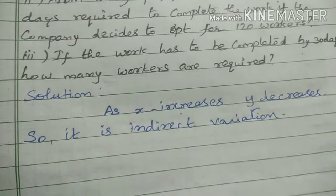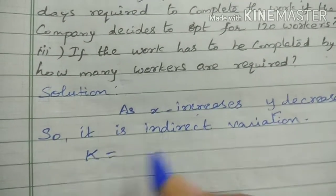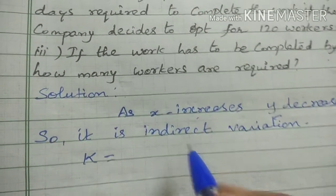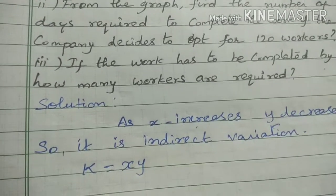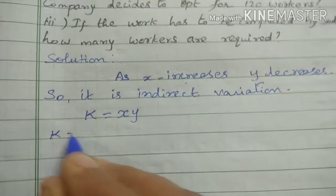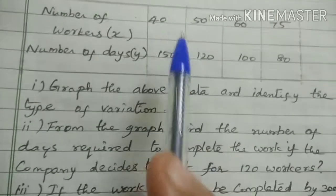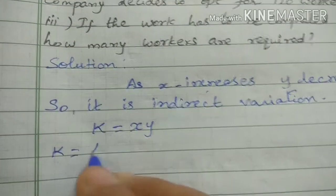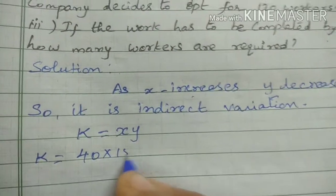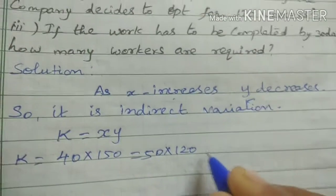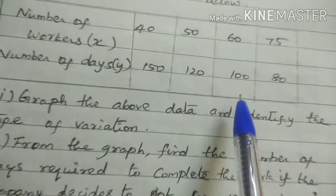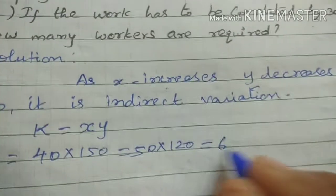We can find k. Multiply x into y: 40 × 150, next 50 × 120, next 60 × 100, next 75 × 80.